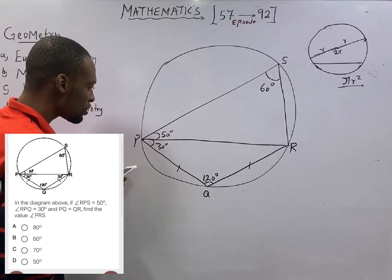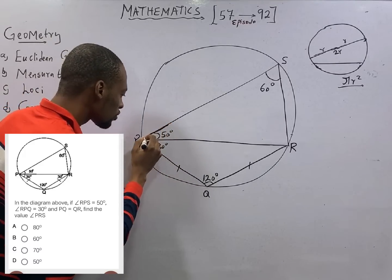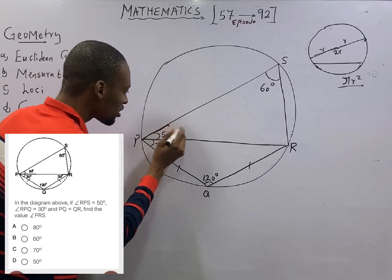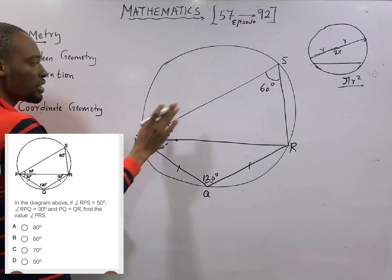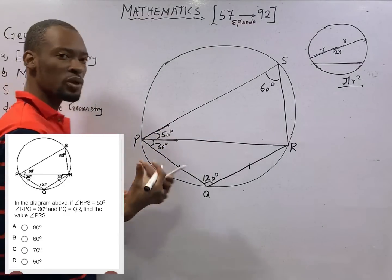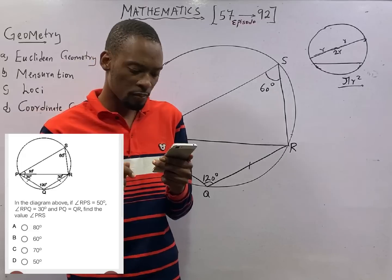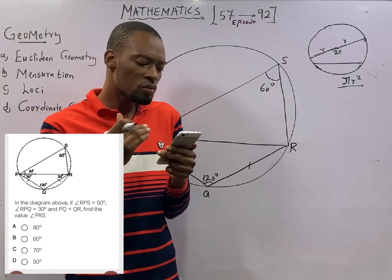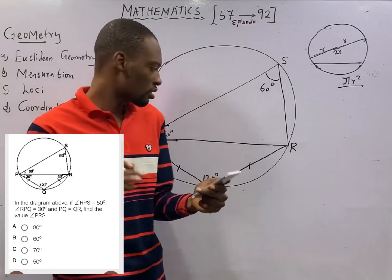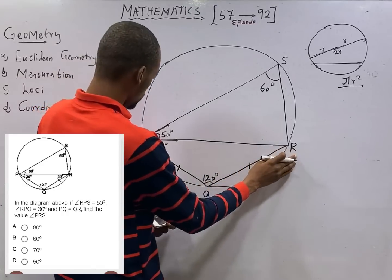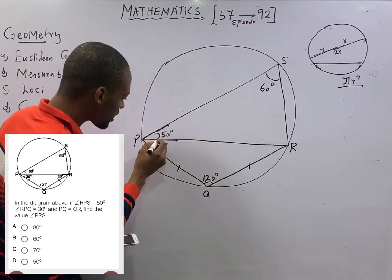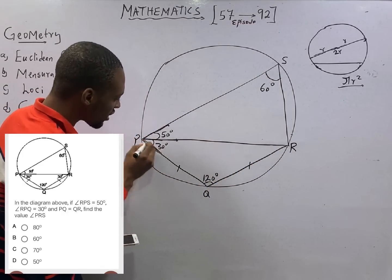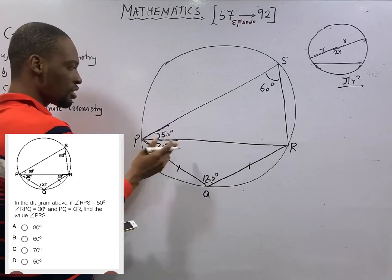Not everything here, but this particular angle, like this, is RPS. They are trying to explain the diagram. RPQ is 30 degrees. So, RPQ. Okay, this is RPQ. Here is 30 degrees.